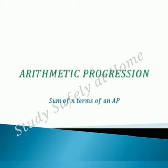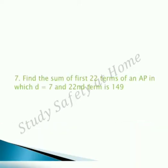Let us solve a problem based on the sum of n terms of an AP. This is question number 7 of exercise 1.3. Find the sum of 22 terms of an AP in which d equals 7 and the 22nd term is 149.